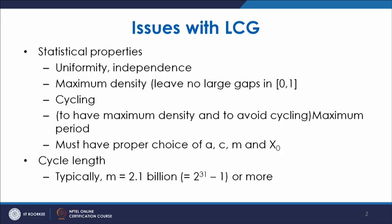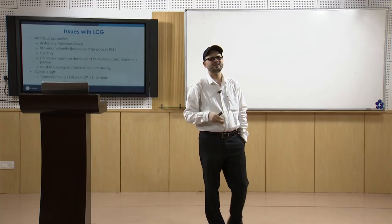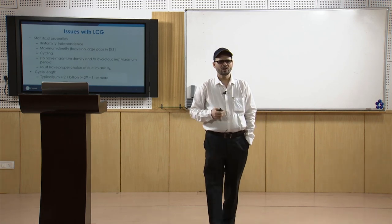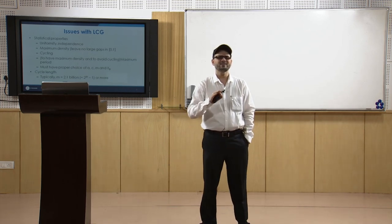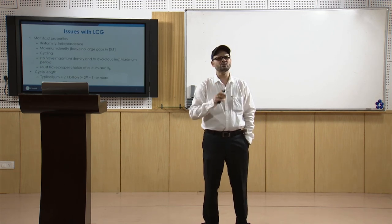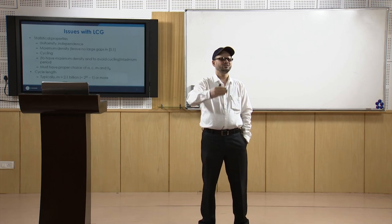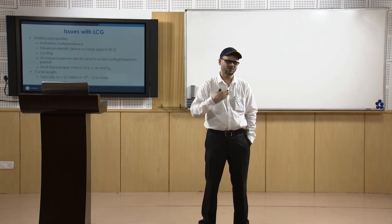Cycling is one issue because after a certain time the generator will start producing similar numbers again. To avoid cycling you must have a maximum period. If the period is large, it gives maximum density and avoids cycling. For that, you need a proper choice of a, c, m, and x₀ (the seed). With proper parameter choice you can ensure a large number of random numbers are generated before recycling.